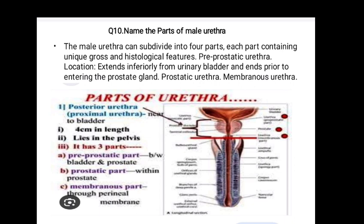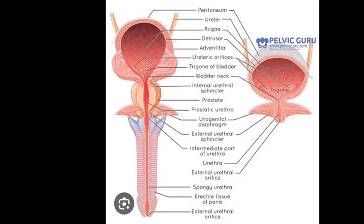The prostatic urethra, membranous urethra, and spongy urethra. The posterior urethra is the proximal urethra near the bladder, about four centimeters in length, lying in the pelvis. It has three parts: the pre-prostatic part below the bladder, the prostatic part within the prostate, and the membranous part through the perineal membrane. A diagram is provided.